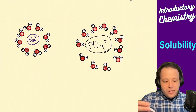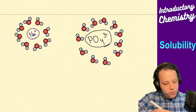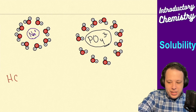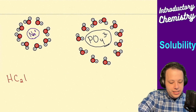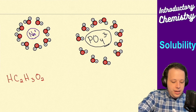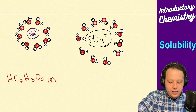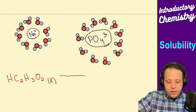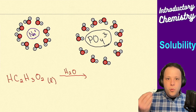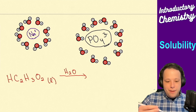What if I gave you acetic acid — C2H3O2 as a liquid — and threw that into water? What is going to be happening? We have to go through the two individual pieces and try to separate the ions.